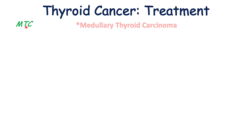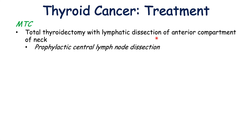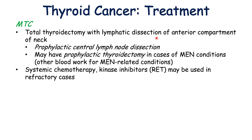For medullary thyroid carcinoma, a total thyroidectomy with lymphatic dissection of the anterior compartment of the neck is an important treatment. In some cases, there can be prophylactic central lymph node dissection, and there may also be prophylactic thyroidectomy in patients with MEN2A or MEN2B conditions. Systemic chemotherapy and kinase inhibitors targeting the RET mutation may be used in refractory cases.